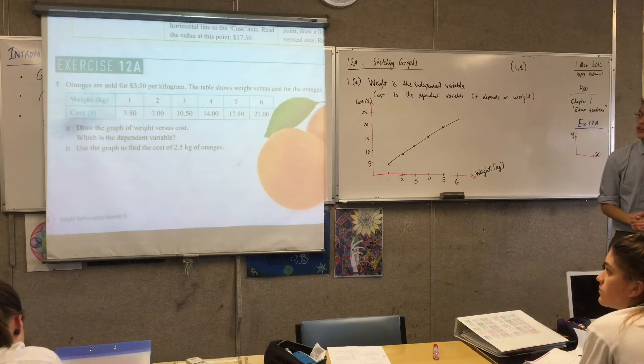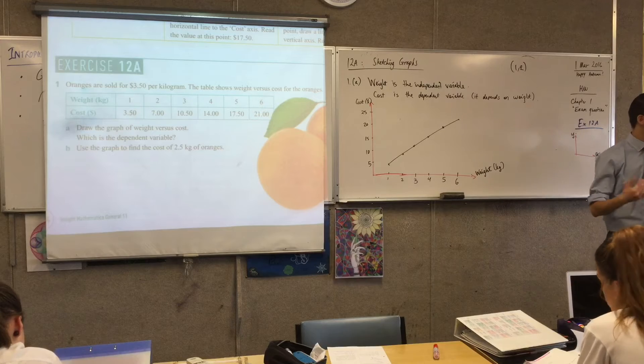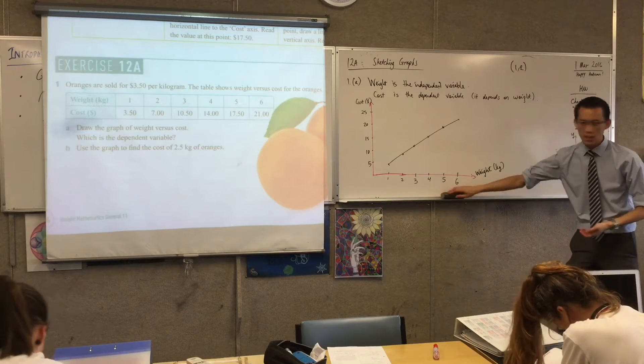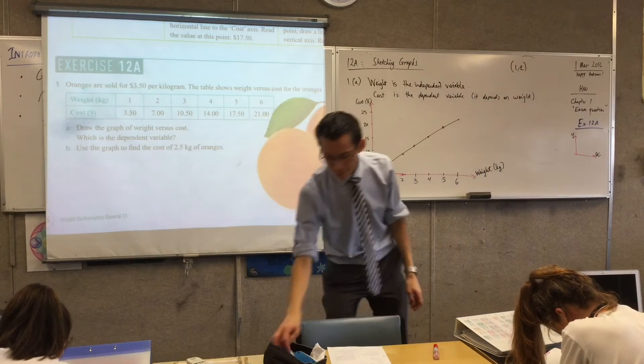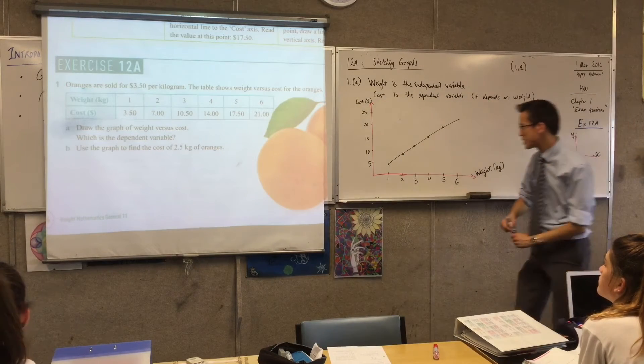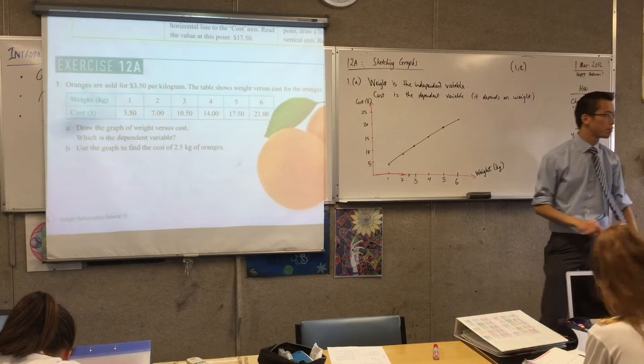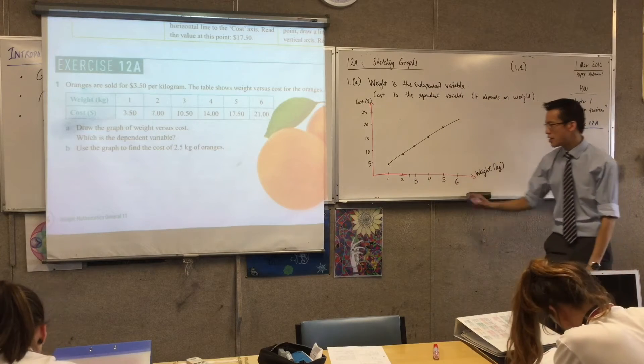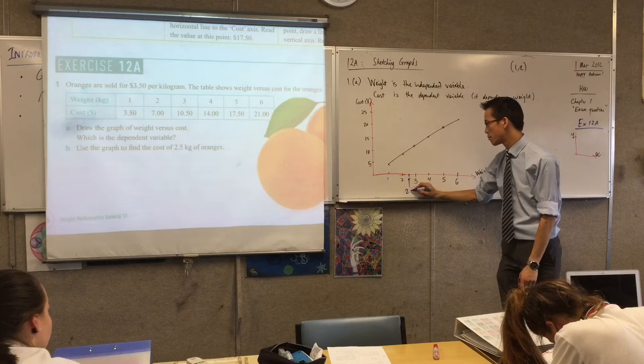So you can see part B says, use the graph to find the cost of two and a half kilos. Now two and a half kilos, where is that on your graph? Get a new colour, okay? And if you see, 2.5 should be exactly halfway between there. Do you see that? So there is 2.5.